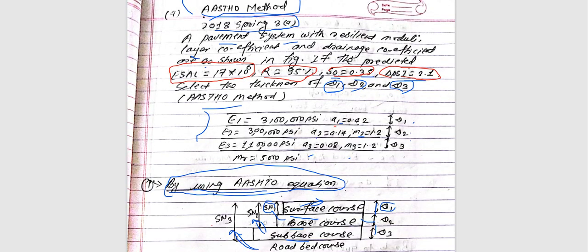From SN1, we find D1. Using the base course data and SN1 value, D1 is determined from the base course layer information.